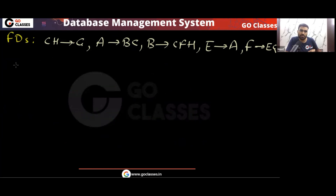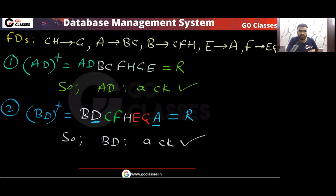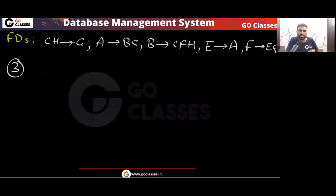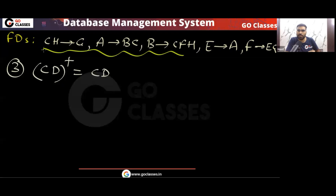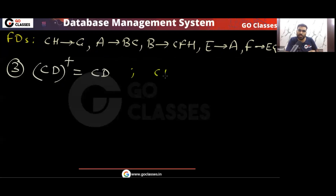Now let's check CD+. CD can determine CD — that's it. Nothing else can be derived. So CD is not a candidate key.